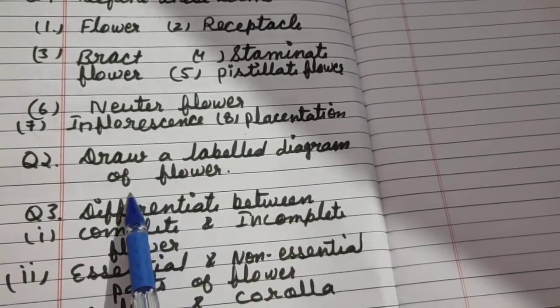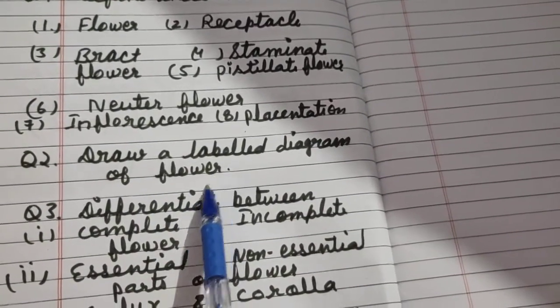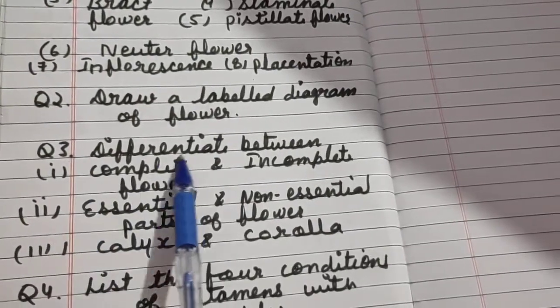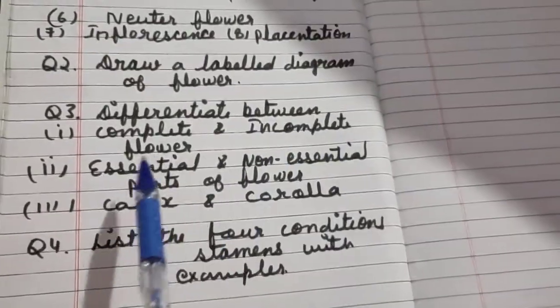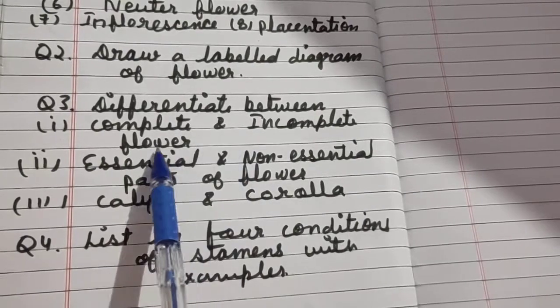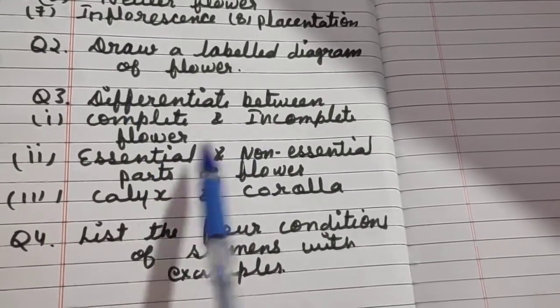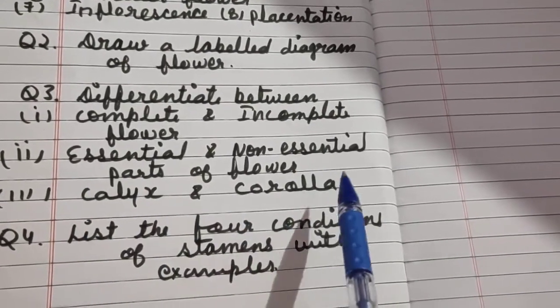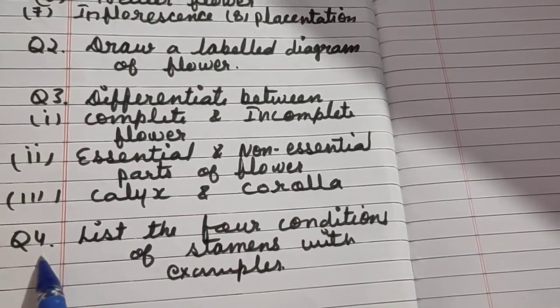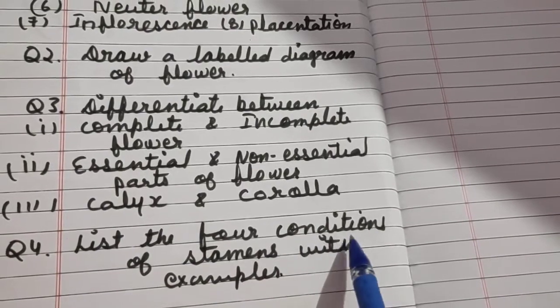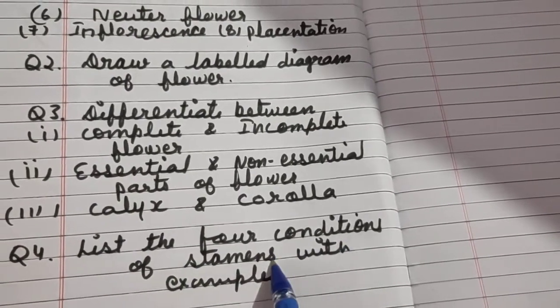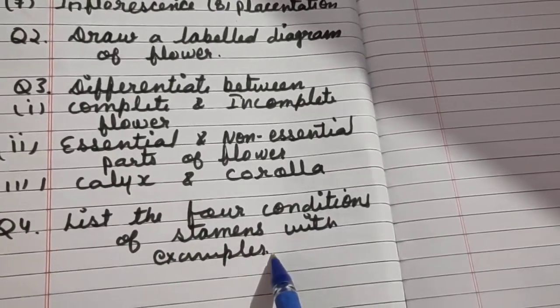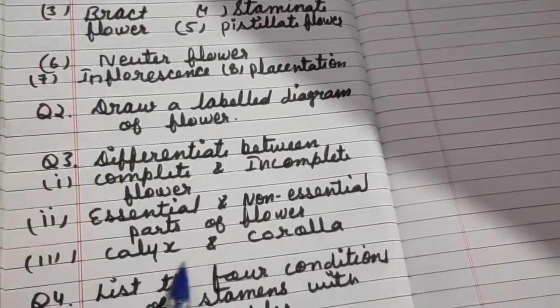Then draw a labeled diagram of flower. Question three: Differentiate between complete and incomplete flower, essential and non-essential parts of flower, and third, calyx and corolla. And question four: List the four conditions of stamens with examples. Please write all answers in your notebook.